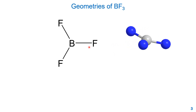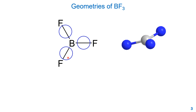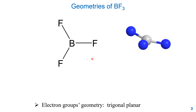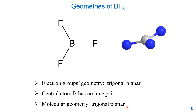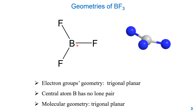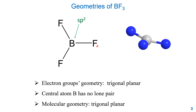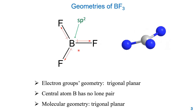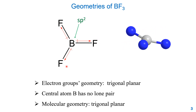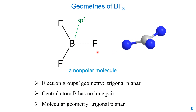Boron trifluoride: the central atom boron has three single bond electron groups, so the electron group geometry is trigonal planar. Since boron has no lone pair, the molecular geometry is also trigonal planar. Boron's electronegativity is 2.0 and fluorine's is 4.0 — a difference of 2.0, making a very polar covalent bond. Boron is sp2 hybrid. Even with three polar bonds, they cancel each other in the trigonal planar arrangement, making BF₃ a nonpolar molecule.